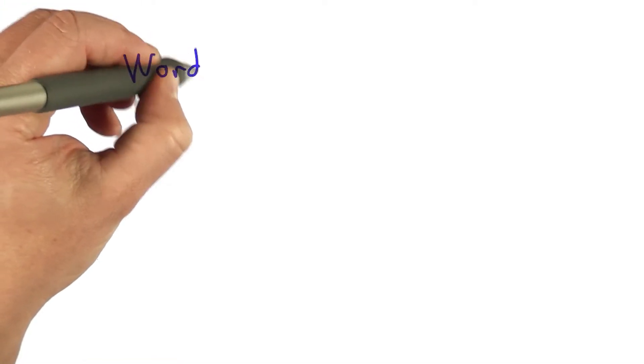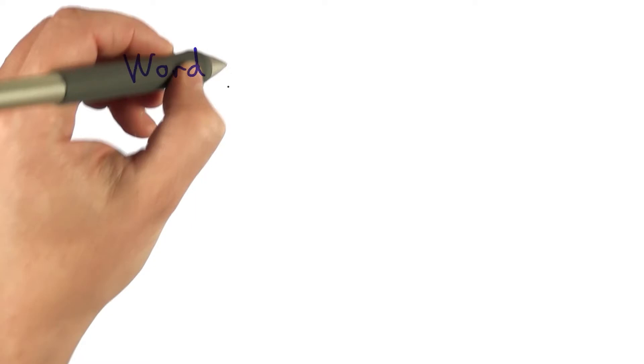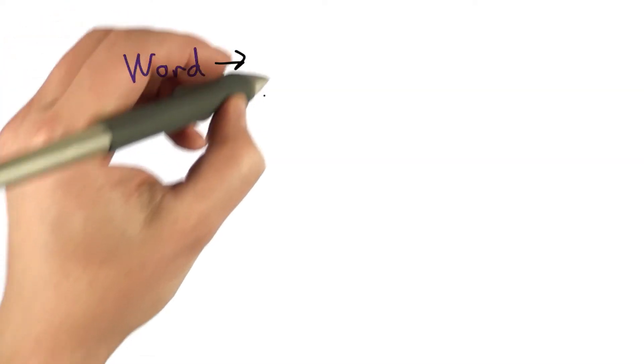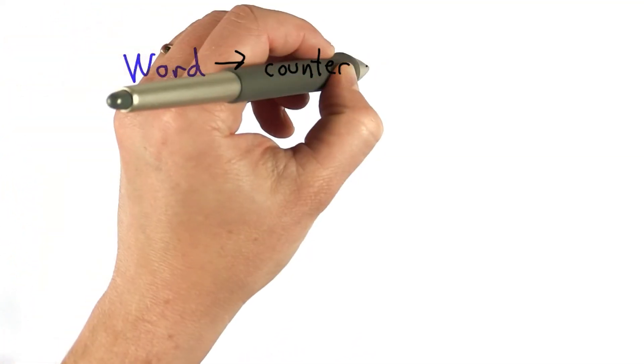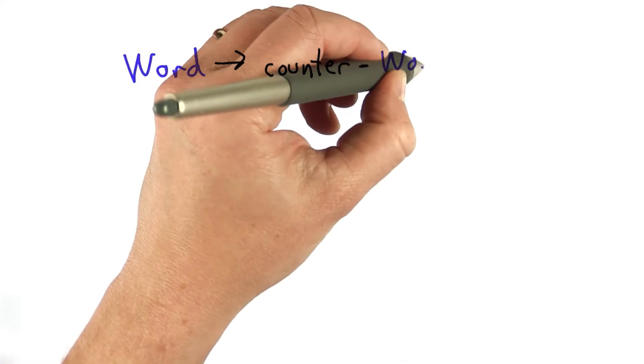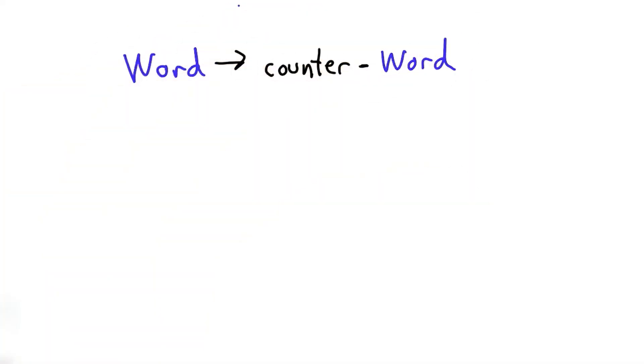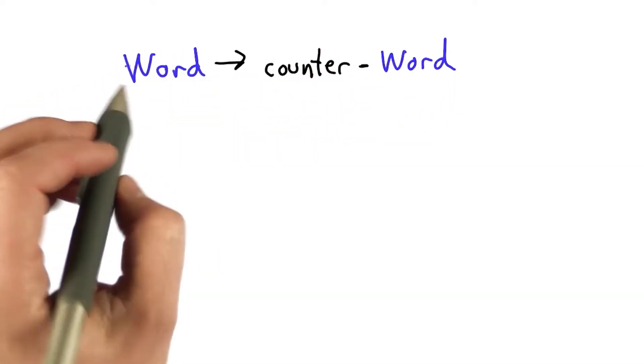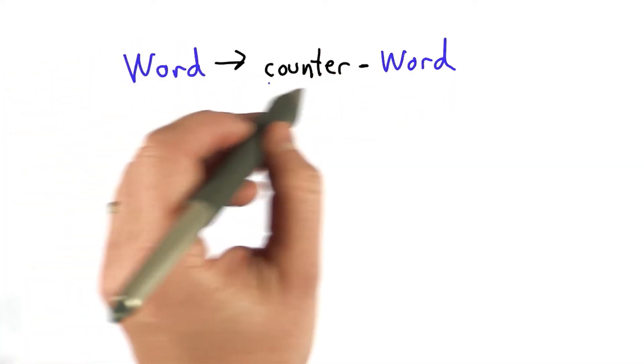For example, we have a rule that says if we have a word, we can make a new word by adding counter in front of the old word. I'm using the same notation that we used back in unit one. This is a BNF replacement grammar. If you need a refresher on this, please go back to the video that introduced that in unit one.